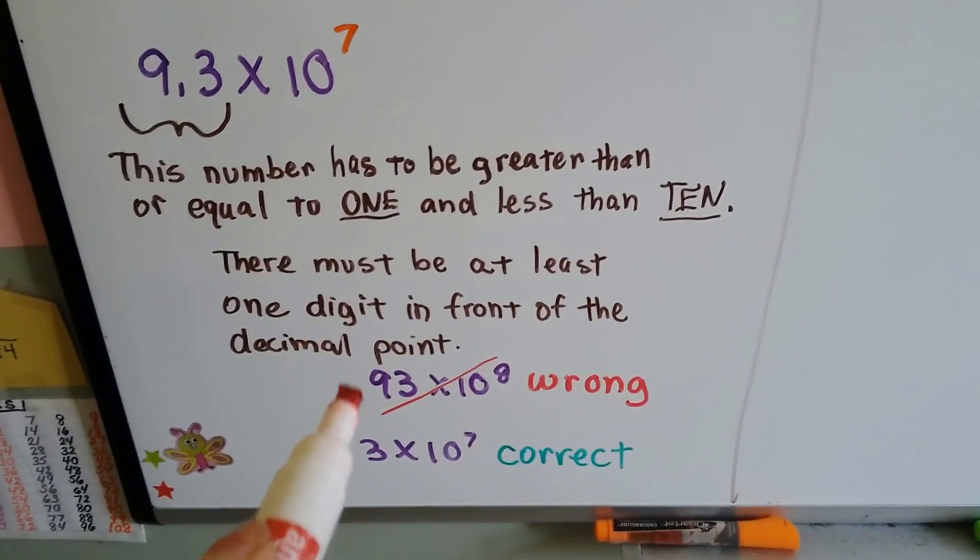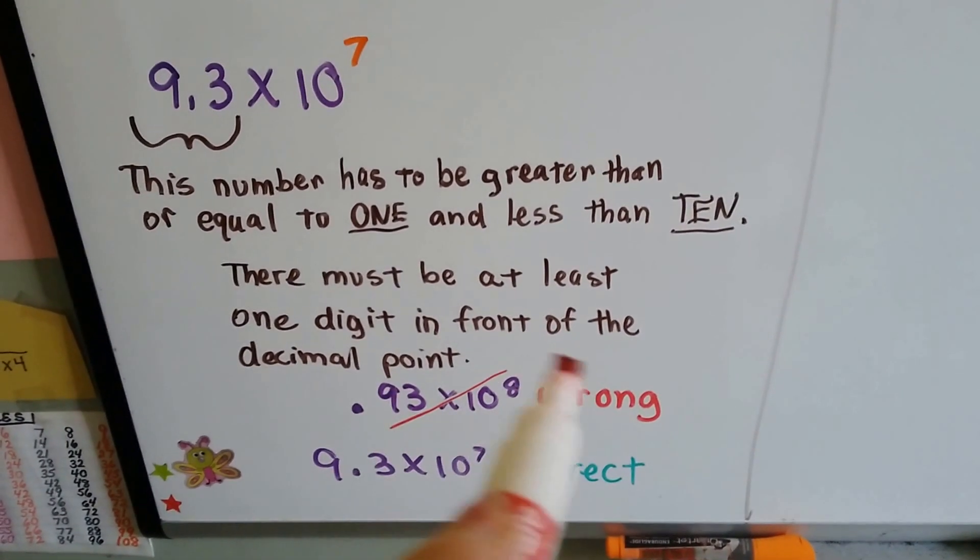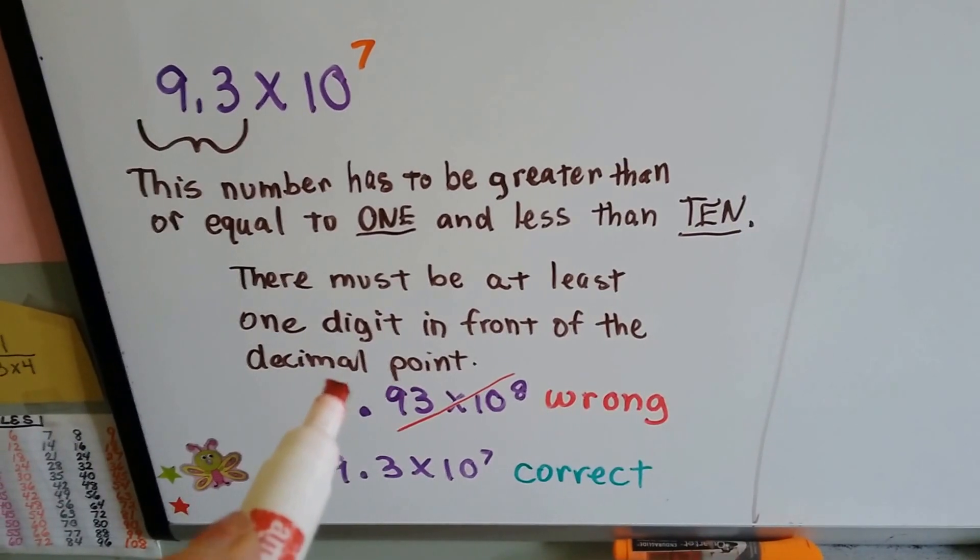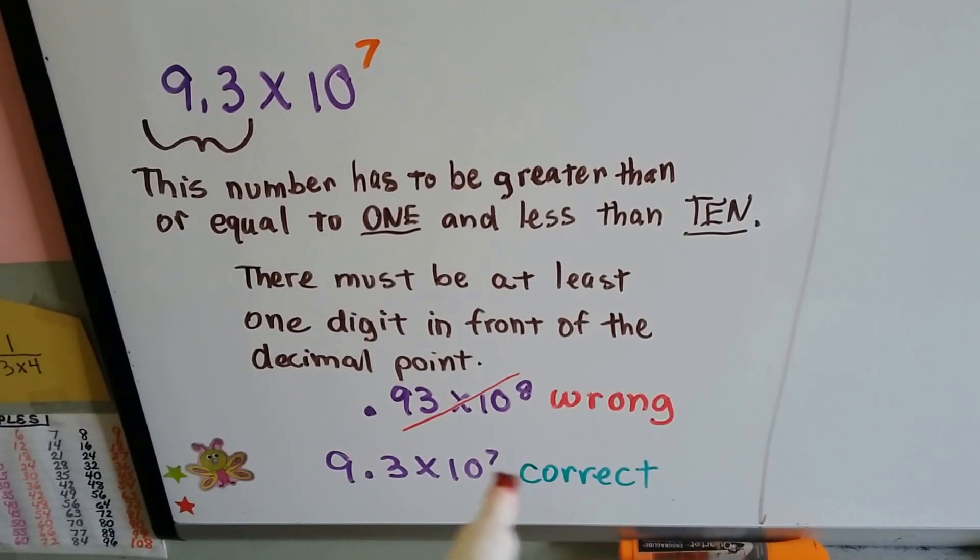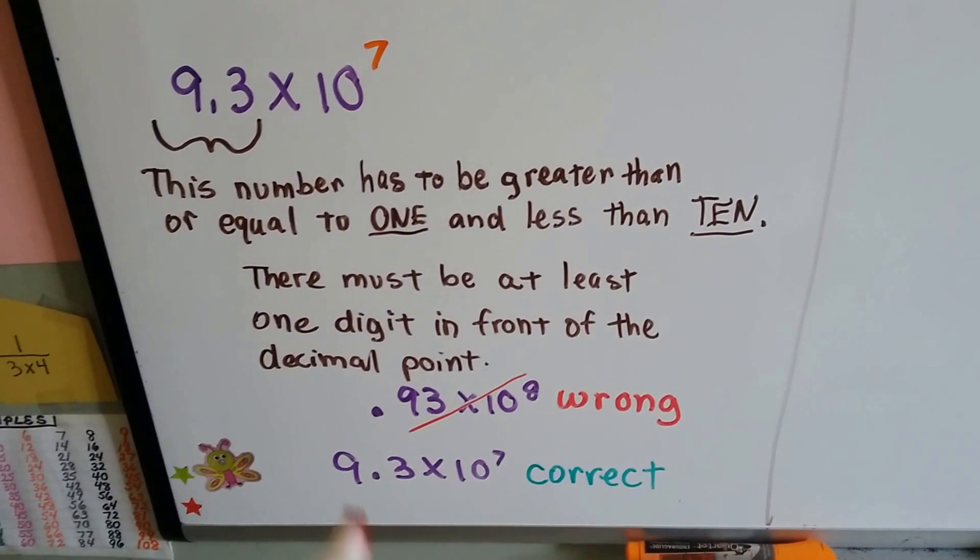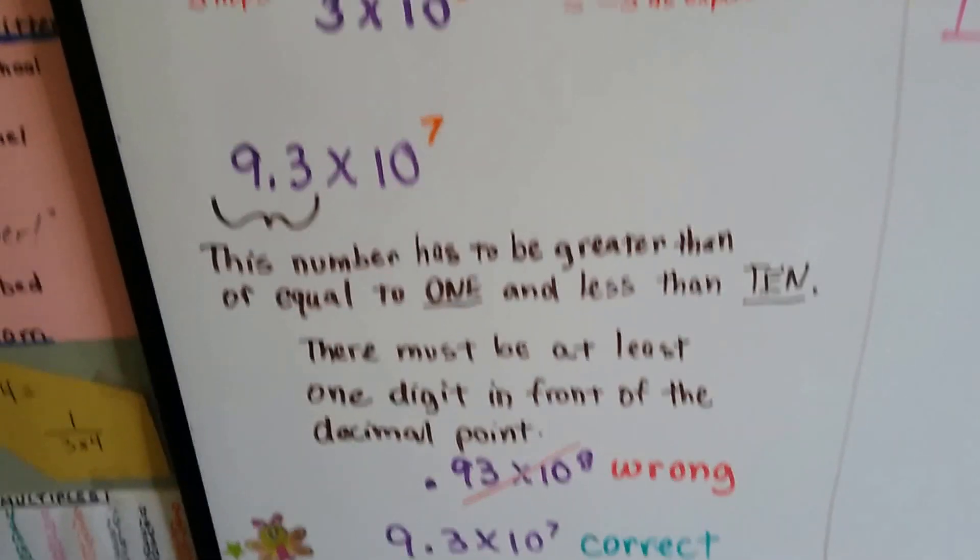You can't put 0.93 times 10 to the 8th. That would be wrong. You need one digit in front of the decimal point, so this is correct. You've got to have that one digit in front of there.